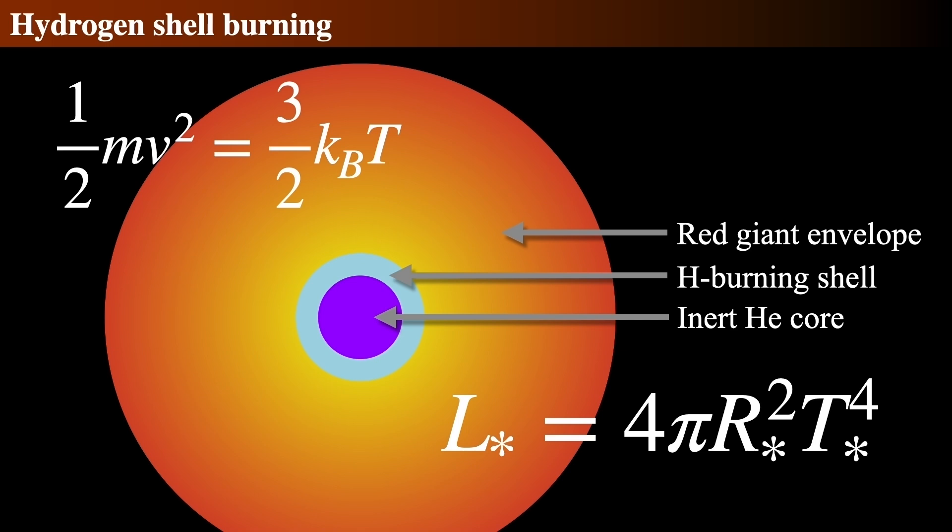On the HR diagram, it moves up, more luminous, and to the right, cooler. All the while this is happening, the central core is becoming quite important to the star.